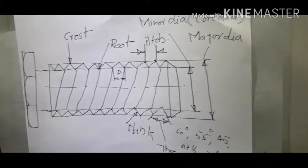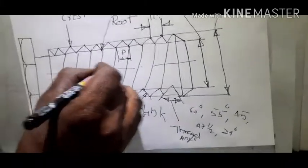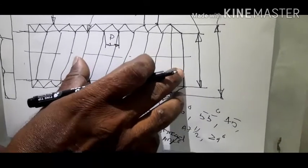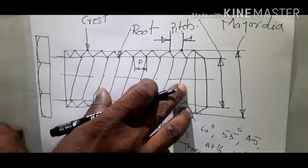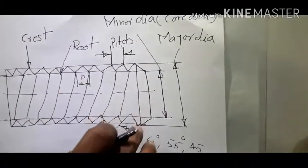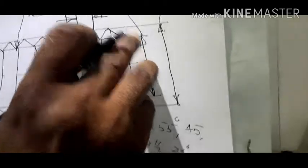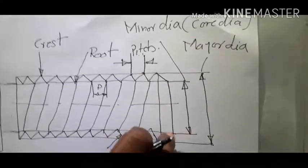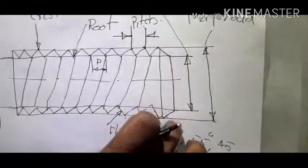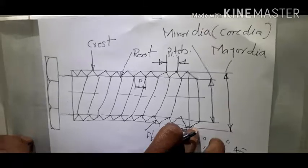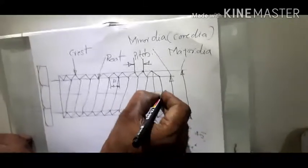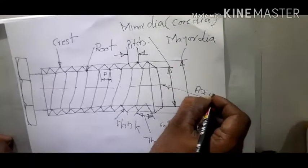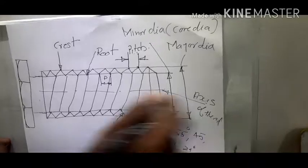First we draw a center line. The purpose of drawing a center line is because this object is a symmetrical one. The major diameter lines are equally spaced from this horizontal center line. This center line is called the axis of the thread.